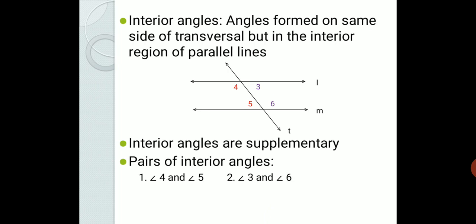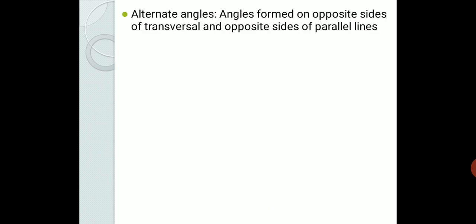Let us learn the third type: alternate angles. These are angles formed on opposite sides of the transversal and opposite sides of the parallel lines — one on the left side and one on the right-hand side of the transversal, and if one is above a parallel line, the second is below the second parallel line. The very important property is that alternate angles are congruent.